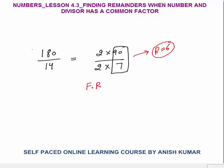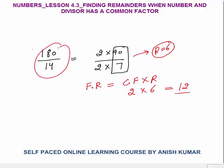The final remainder — FR — would be common factor into remainder. Our common factor was 2, remainder was 6, so the final remainder would be 12, and that is your final answer. If you calculate normally 180 by 14, the remainder would be 12. Keep the common factor aside, calculate the remainder, and the final remainder is common factor into the remainder you got.